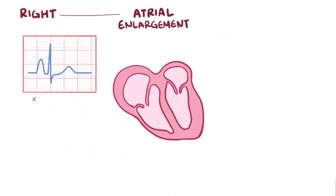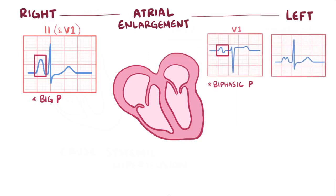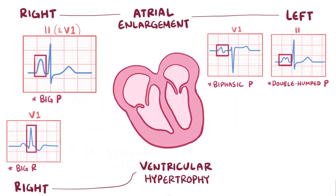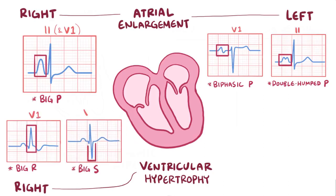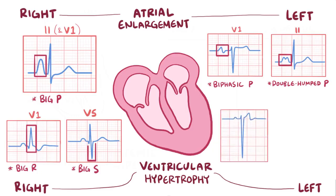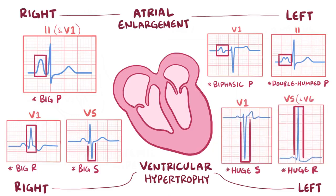Alright, as a quick recap: right atrial enlargement shows a big P wave in lead 2 and V1, whereas left atrial enlargement has a biphasic P wave in lead V1 and a double-humped P wave in lead 2. Right ventricular hypertrophy shows a big R wave in V1 and a big S wave in V5 and V6, whereas left ventricular hypertrophy shows the opposite — a huge S wave in V1 and a huge R wave in V5 and V6, adding up to over 35 mm.